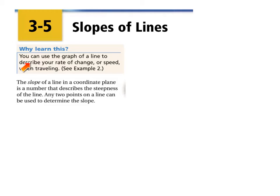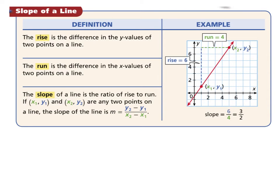It is important to note that you can use the graph of a line to describe the rate of change or speed when traveling. Slope represents speed of something. So here's your definition, which you don't need to write down. You've already done this. The slope of a line in a coordinate plane is the number that describes the steepness of a line. The slope is how steep something is. Any two points on a line can be used to find the slope. Once again, I would expect that you know how to do this. You can skip ahead if you'd like.